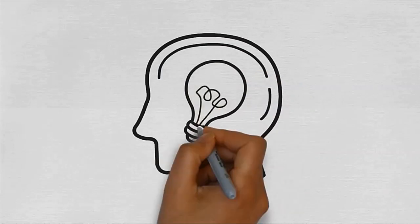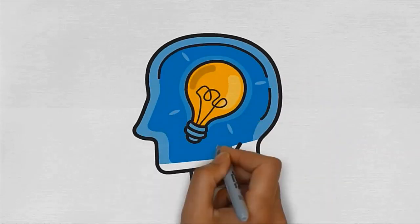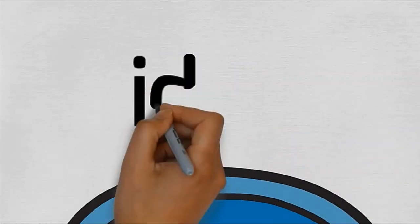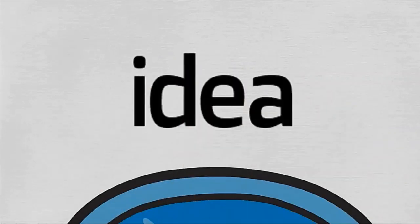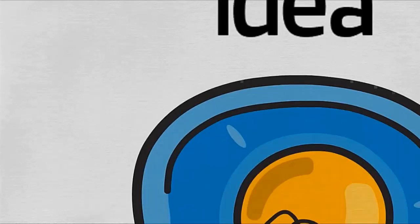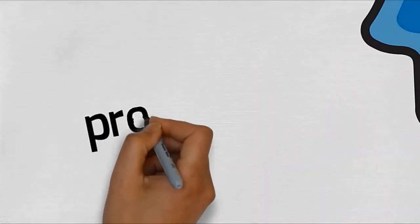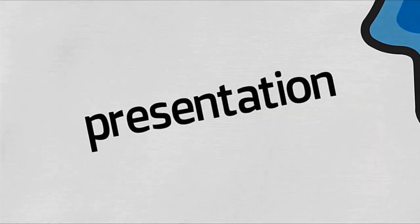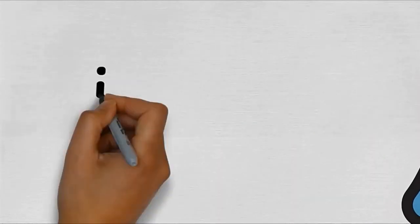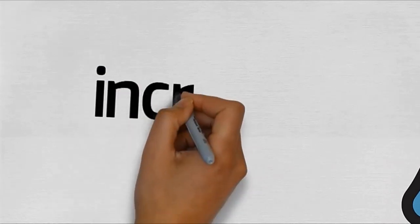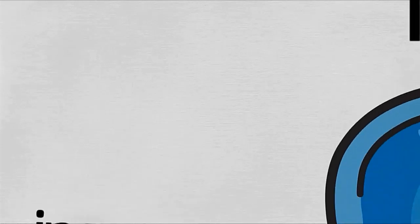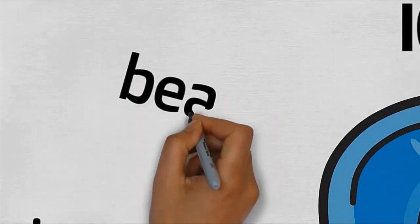Besides the people, things, and places - orang, benda, dan tempat - that we can see, hold, or hear, nouns can also be in the form of ideas or concepts that we cannot see, hold, or hear. For example, presentation, increase (peningkatan or kenaikan), and beauty (keindahan or kecantikan).